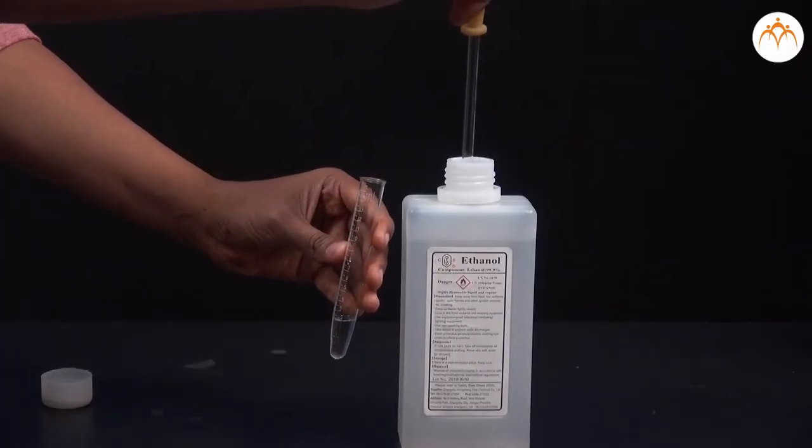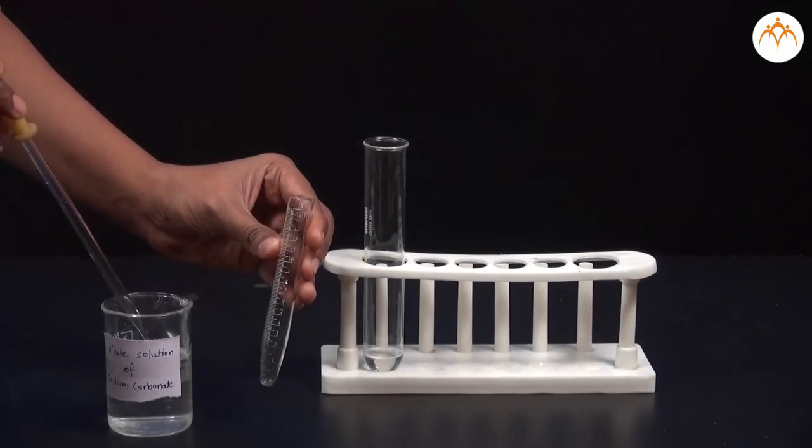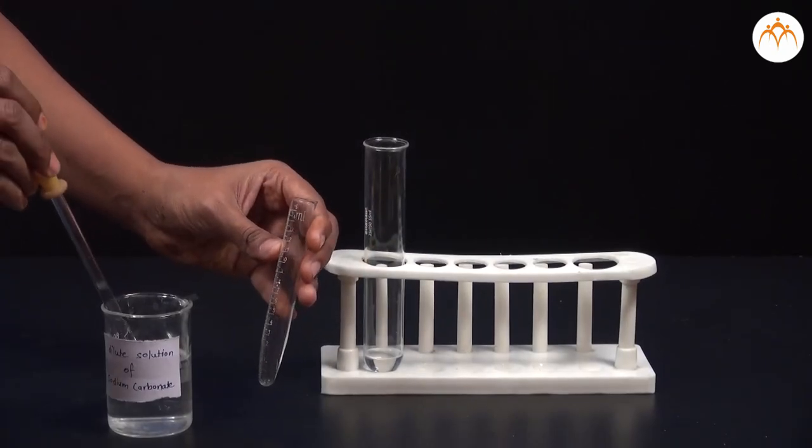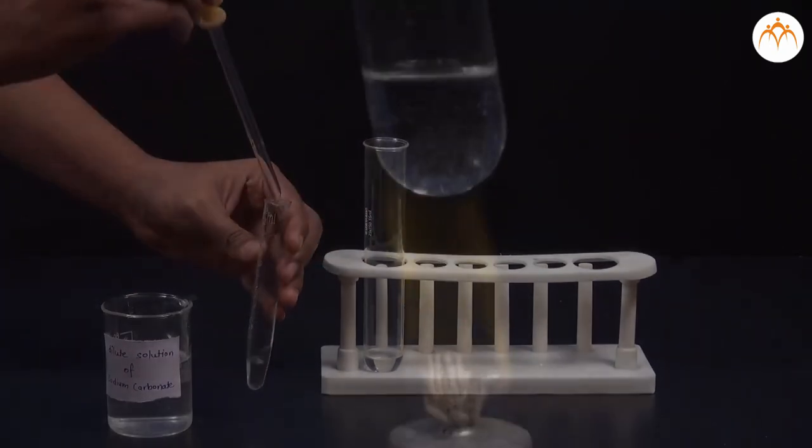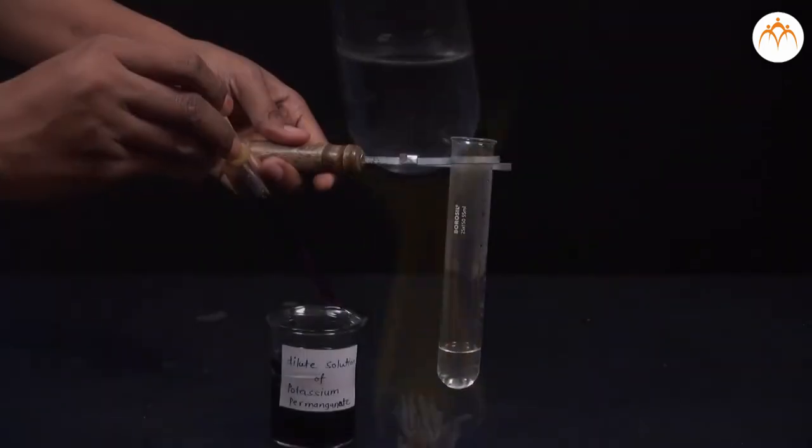Part 1: Oxidation of ethanol. We take 2 to 3 ml of ethanol in a test tube and add 5 ml sodium carbonate solution to it. We warm the mixture on a burner or spirit lamp.